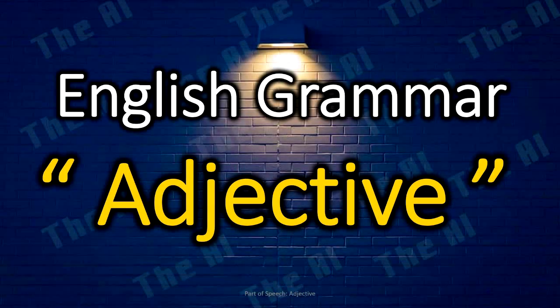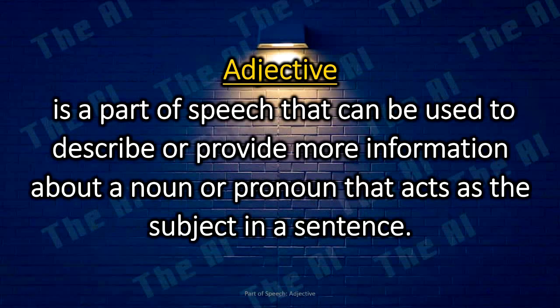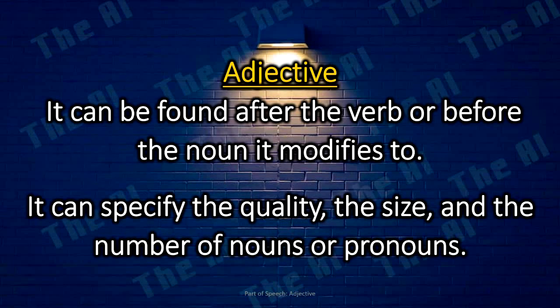Adjective. An adjective is a part of speech that can be used to describe or provide more information about a noun or pronoun that acts as the subject in a sentence. Adjectives can be found after the verb or before the noun they modify, and can specify the quality, size, and number of nouns or pronouns.